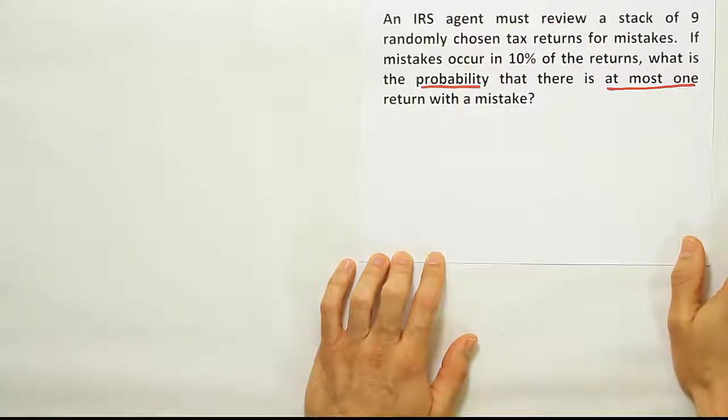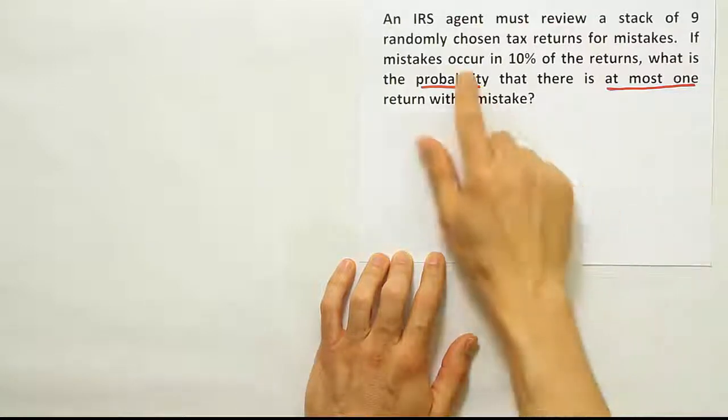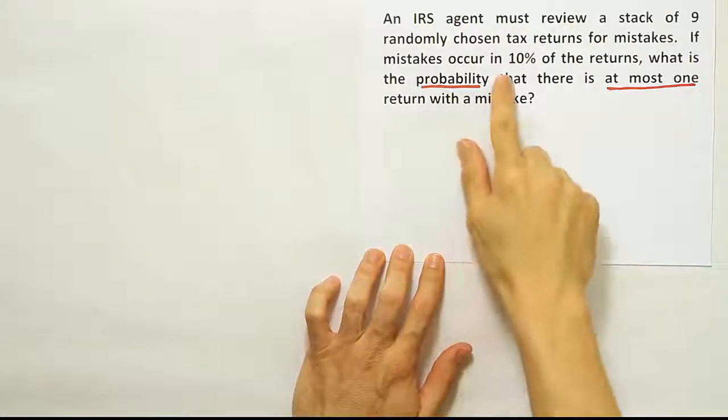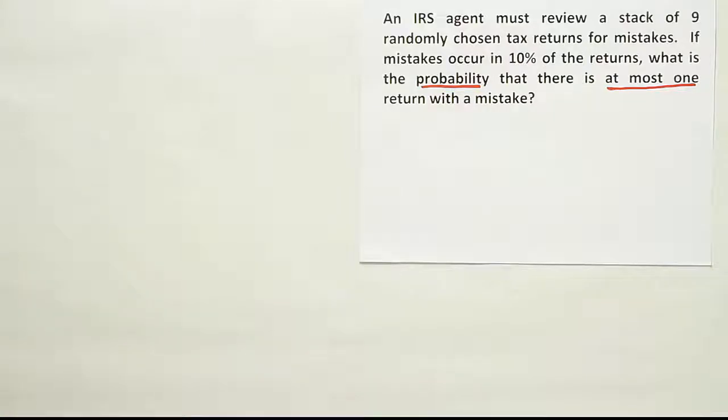They're not connected. They're not the same reviewer or the same guy who's filing the return. And finally, is there a fixed probability? It says yes, it's a 10% chance of the returns having a mistake, so we have a fixed probability. So I think it's binomial in nature. And from that, I should go ahead and write a probability statement.